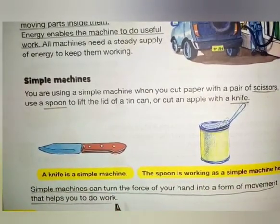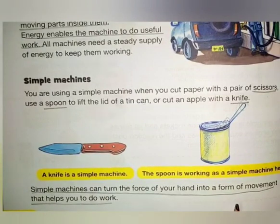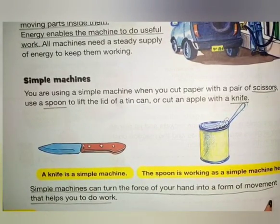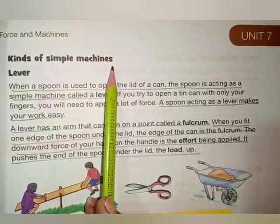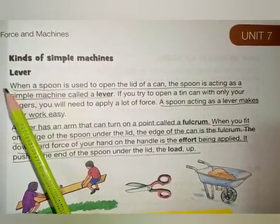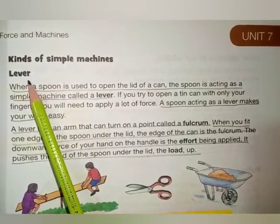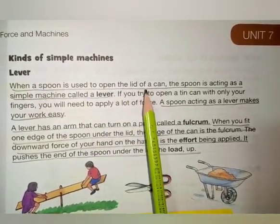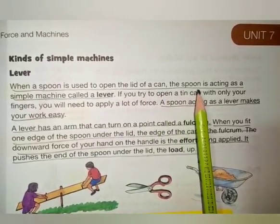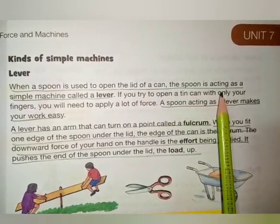Simple machines: scissors, spoon, and knife — these are simple machines. Simple machines can turn the force of your hand into a form of movement that helps us to do work. Kinds of simple machines: the lever.